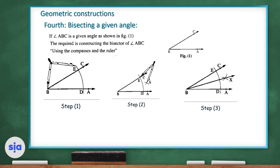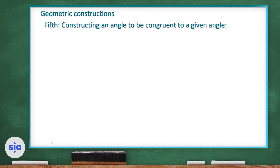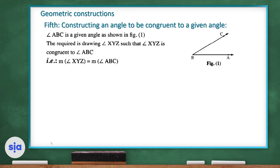The fifth construction is constructing an angle congruent to a given angle. For example, if we have angle ABC, the required is to draw another angle XYZ such that angle XYZ is congruent to angle ABC, meaning the measure of angle XYZ equals the measure of angle ABC.